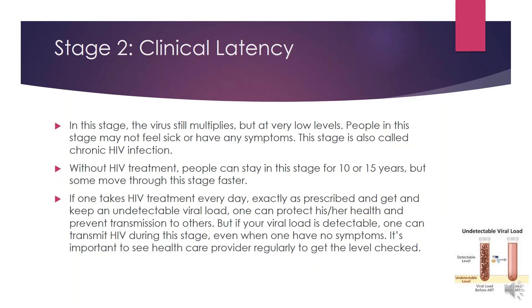Regarding undetectable viral load — as indicated in the picture on the lower right — there are two conditions shown: one is an undetectable viral load and the other is a detectable viral load. Clinically, undetectable means there are fewer than 50 copies of HIV per milliliter of blood, meaning the person would not transmit it to others. However, if the viral load is detectable, one can transmit HIV during this stage even without symptoms.